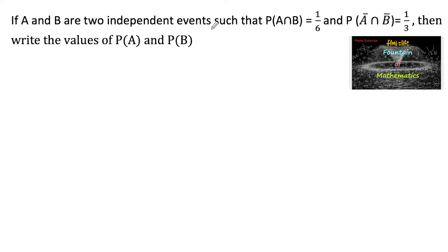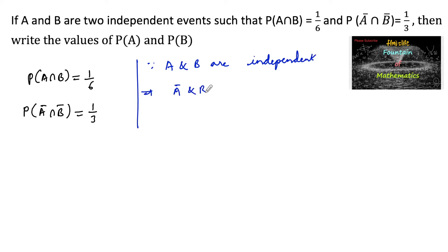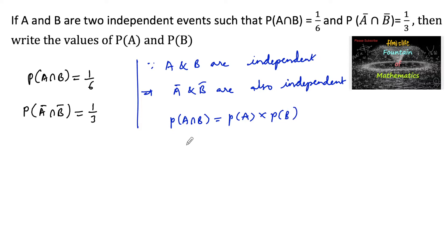If A and B are two independent events such that P(A∩B) = 1/6 and P(Ā∩B̄) = 1/3, then find the values of P(A) and P(B). Since A and B are independent events, this implies that Ā and B̄ are also independent. By the definition of independent events, P(A∩B) = P(A)·P(B), and P(Ā∩B̄) = P(Ā)·P(B̄).